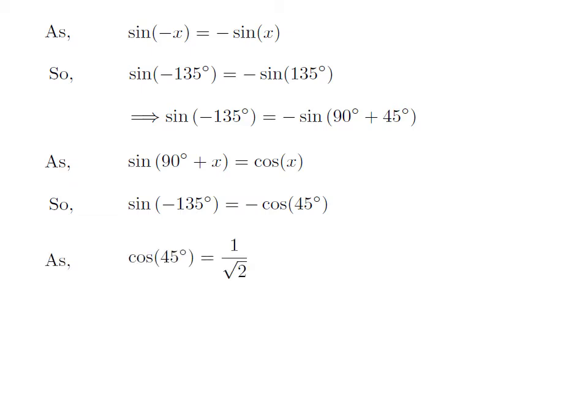We know the value of cosine of 45 degrees is equal to 1 upon square root of 2. So, we get the value of sine of minus 135 degrees is equal to minus 1 upon square root of 2.